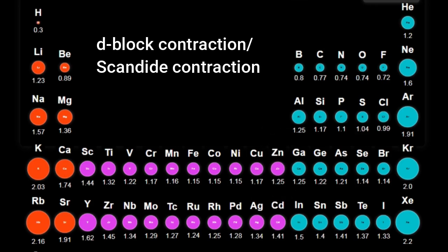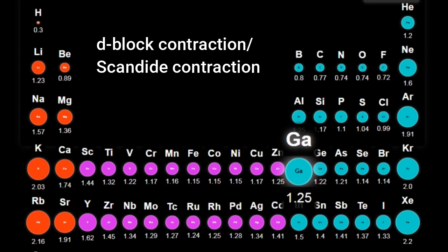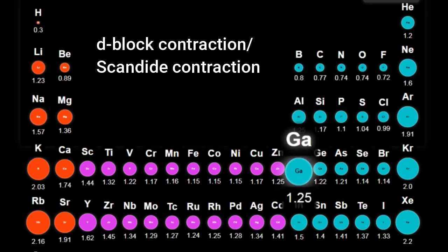This is known as the D-block contraction or the Scandide contraction. Because of this, while going from sodium to aluminium there is a decrease of around 30 angstroms, but going from potassium to gallium there is a decrease of around 80 angstroms. Therefore, the radius of gallium and aluminium becomes almost similar, and some books even mention the radius of gallium to be even lower than that of aluminium.